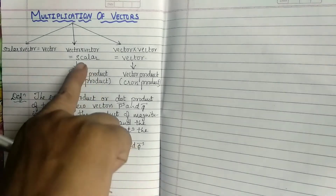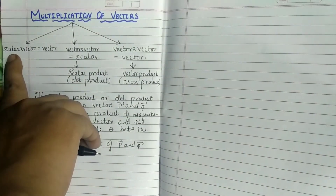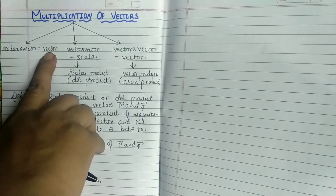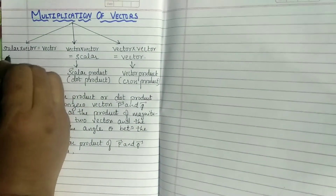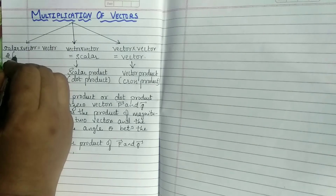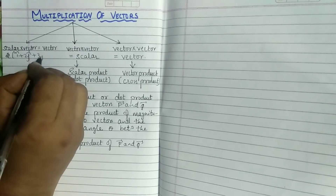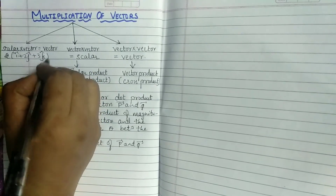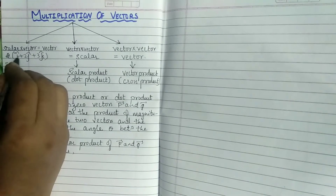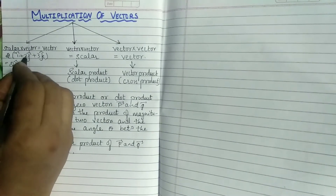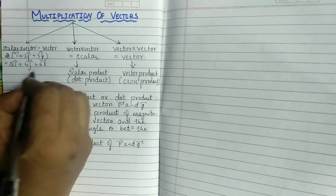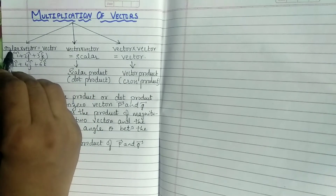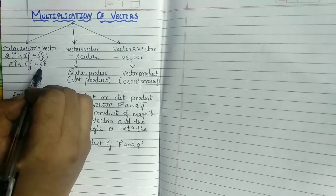Before we proceed, let us see how scalar into vector gives a vector quantity. It is very simple. Scalar means any number you can take. For example, if I take 2 and multiply with the vector i cap plus 2j cap plus 3k cap, then: 2 into i cap is 2i cap, 2 twos are 4j cap, 2 threes are 6k cap. So even though you multiplied 2, which is a scalar, with a vector, you get the answer as a vector quantity only.